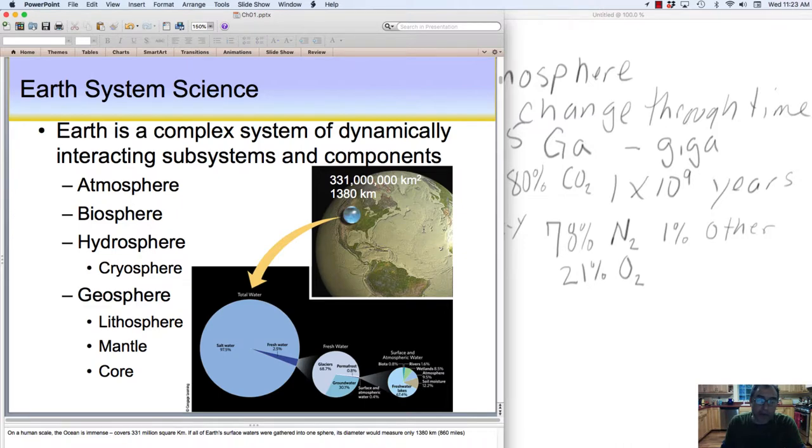But if you took all the ocean water, all the freshwater we have on Earth and made a sphere out of that, we'd see that that sphere would have a diameter of about 860 miles, which is 1,380 kilometers. So really it's not as big as we think it is, but it's an important resource.